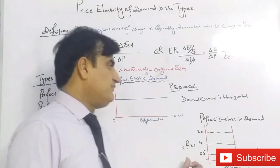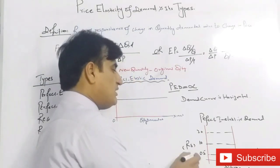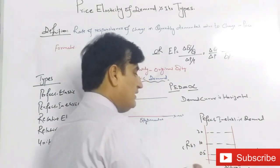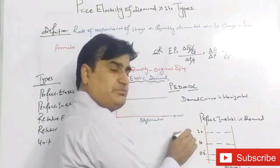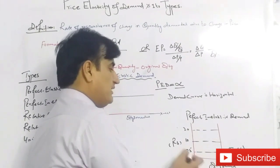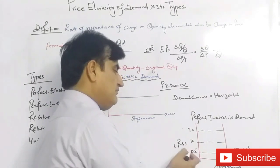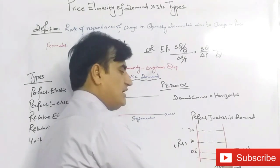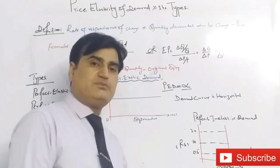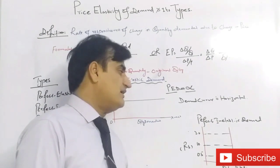You can see that under Perfect Inelastic Demand, the demand curve is vertical and the quantity demanded does not respond to change in price. When the price of salt is 20 rupees per kg, the quantity demanded is 2 kg. When the price is 10, the quantity demanded is still 2 kg. When the price is 5, the quantity demanded is also 2 kg. So the quantity demanded does not respond to change in price — this is Perfect Inelastic Demand.